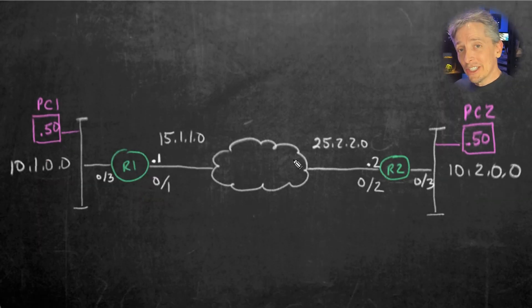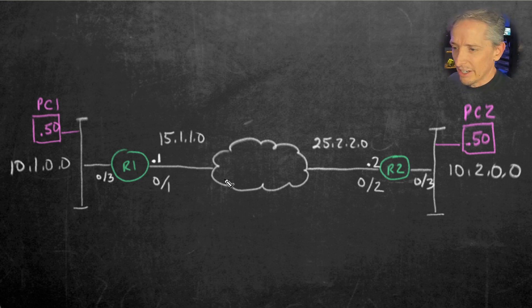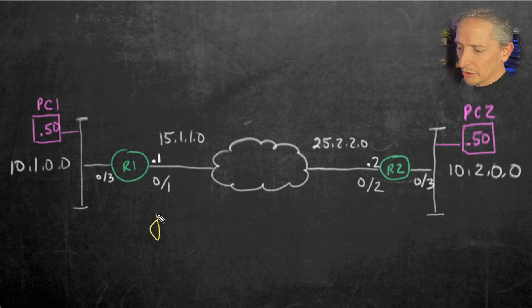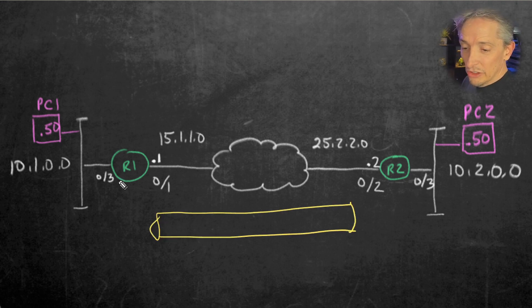So if somebody steals it or is eavesdropping on that tunnel traffic, they won't be able to make sense of it because it's encrypted. So let's use this topology here with these two routers, R1 and R2, which are both connected to the publicly routable internet. And if we wanted to build a tunnel, let's go ahead and draw the tunnel visually. So we're working on building this logical tunnel that they can use to communicate with each other over the internet.